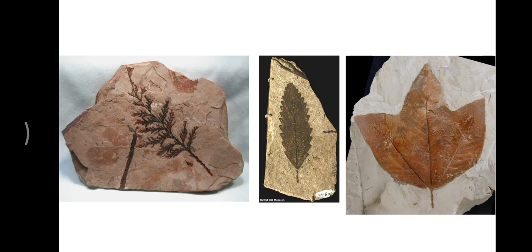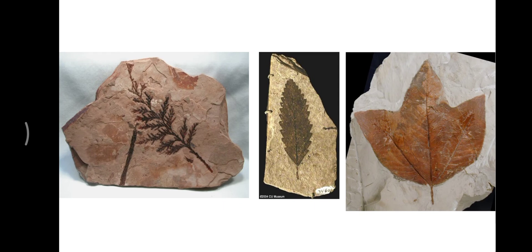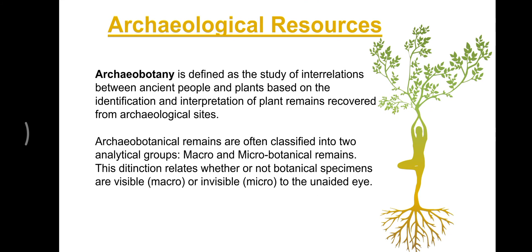Some pictures of fossils have been attached. Archaeobotany is defined as the study of interrelationships between ancient plants and people, based on the identification and interpretation of plant remains recovered from archaeological sites. Archaeobotanical remains are often classified into two analytical groups: macro and micro botanical remains. The distinction relates to visibility — if specimens are visible they are known as macro botanical remains, and if invisible they are known as micro botanical remains.